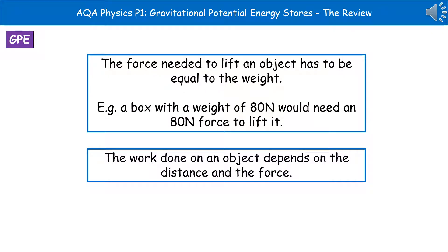When we're considering what we need to do to actually lift an object, in order to make the object move off the ground, the force we need to apply has to be equal to the weight. For example, if we had a box with a weight of 80 newtons, we would need an 80 newton force to lift it. The work we do on an object depends on distance and force.